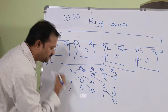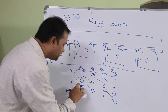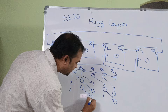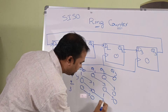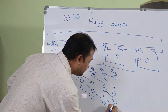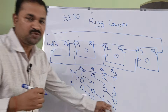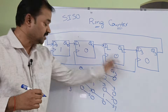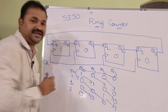Applying the third clock pulse: the zeros shift to the right positions, and the one shifts further along. The output of the last flip-flop is zero, so that zero is fed back to the first flip-flop.